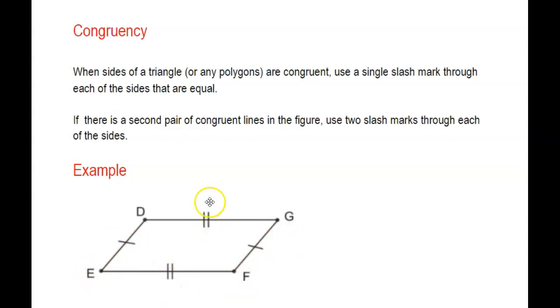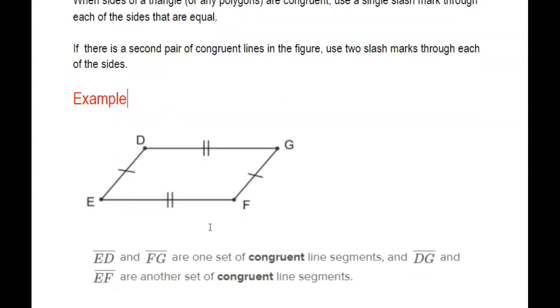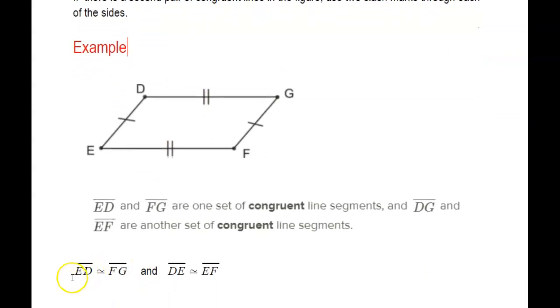I would say DG is congruent to EF, but they're not congruent to these two here. So I have to indicate by using a different number of slash marks, and I would write them like this.